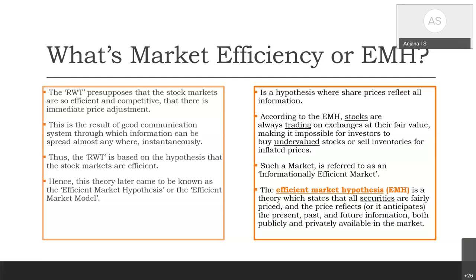When information is immediately reflected in stock prices, there is immediate price adjustment, making the market efficient. This happens because of a good communication network through which information is spread and transmitted across the world instantaneously. This theory came to be known as the Efficient Market Hypothesis or Efficient Market Theory.